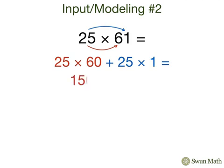25 times 60 is 1,500, and 25 times 1 is 25. When we add them together, we get 1,525. So the product of 25 times 61 is 1,525.